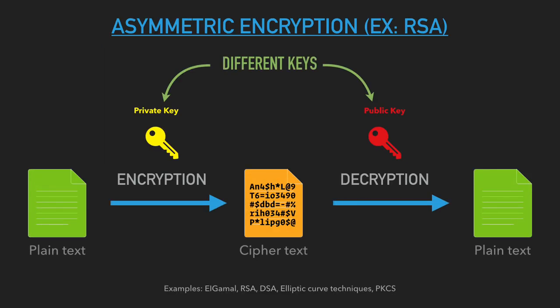First, let us look at what asymmetric encryption is. Basically it uses different keys — that is the private key and the public key. You can use the private key to encrypt data, and to decrypt data you can use the public key. The best example of asymmetric encryption is RSA.